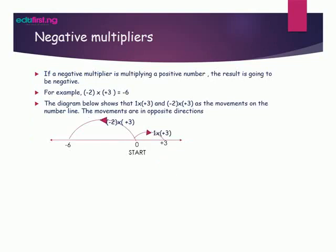If a negative multiplier is multiplying a positive number, the result is going to be negative. For example, minus 2 times plus 3 equals minus 6. The diagram below shows that the movements on the number line for plus 3 and minus 2 times plus 3 are in opposite directions, as you can see on the figure below.